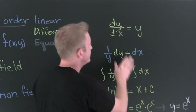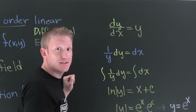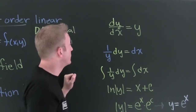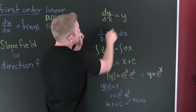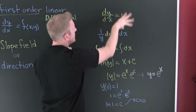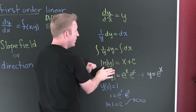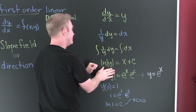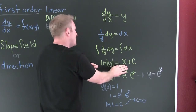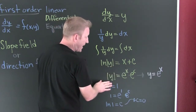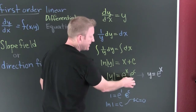This differential equation is totally separable and solvable — not all of them are. If we were to solve it, we would separate it: bring the y down, separate the differential, and integrate both sides. Over here we have the natural log, and over there we have x plus c. Exponentiate both sides, giving us the absolute value of y equals e to the x times e to the c.